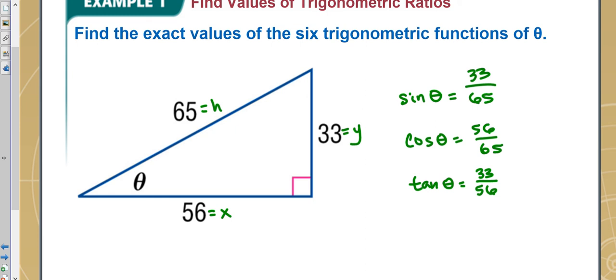Now, the reciprocal functions are just, you're just going to flip them. So cosecant, you flip this. This would be h over y, 65 over 33. Secant would be the reciprocal of cosine, so it would be 65 over 56. And finally, cotangent is the reciprocal of tangent, so it would be 56 over 33. You could use any one of these to figure out what the angle is here.